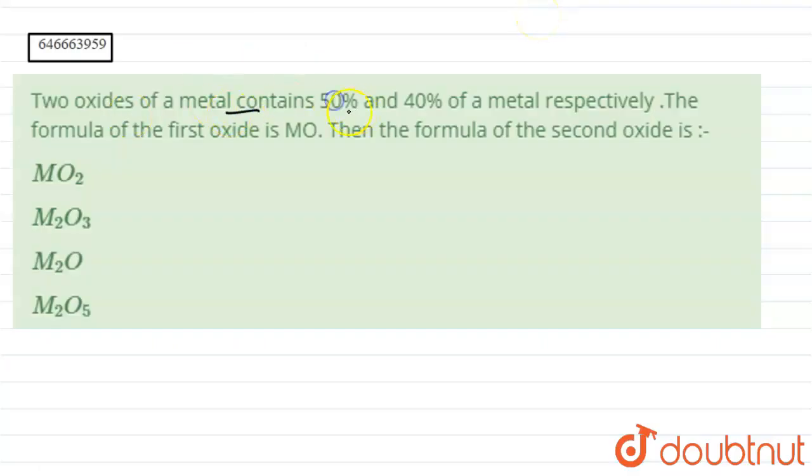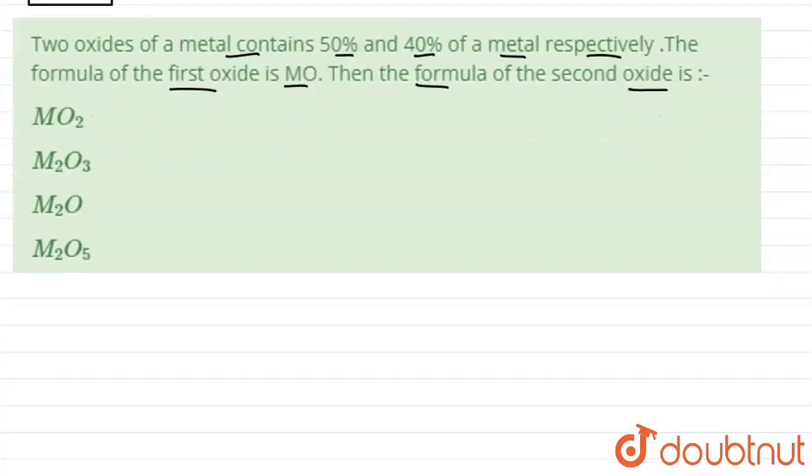We have two oxides of metal which contain 50 percent and 40 percent of metal respectively. The formula of first oxide is MO. Then the formula of second oxide will be...